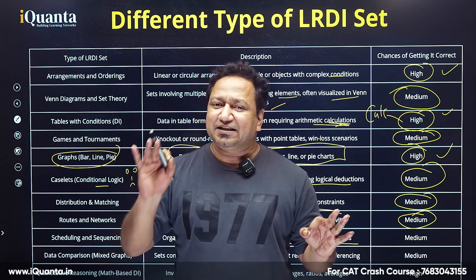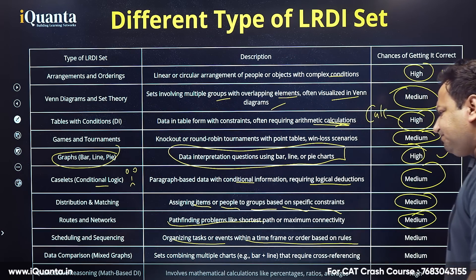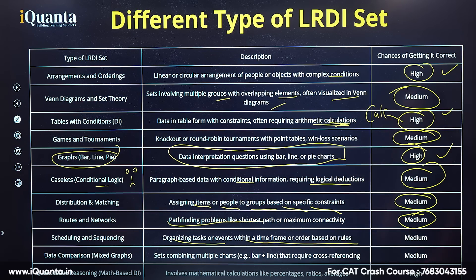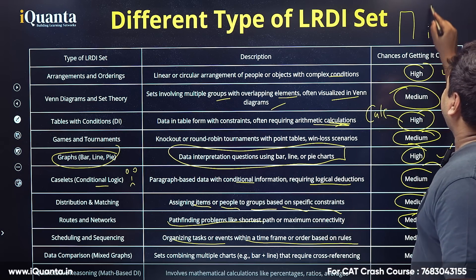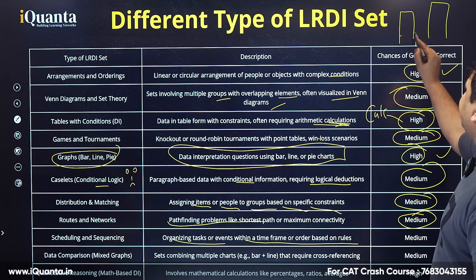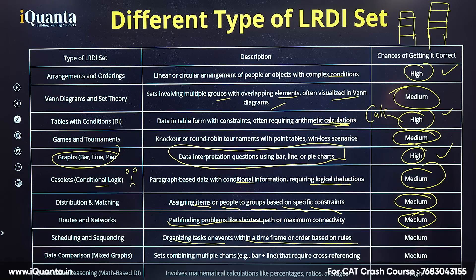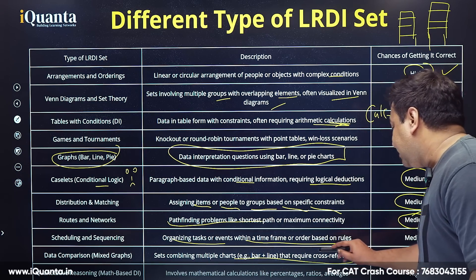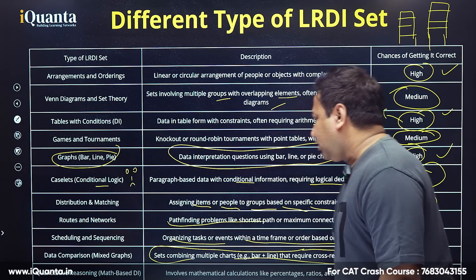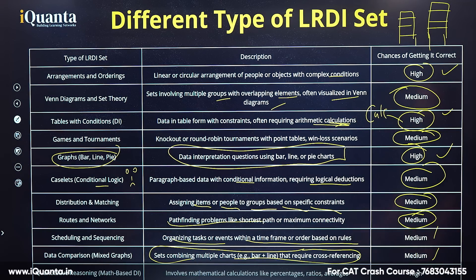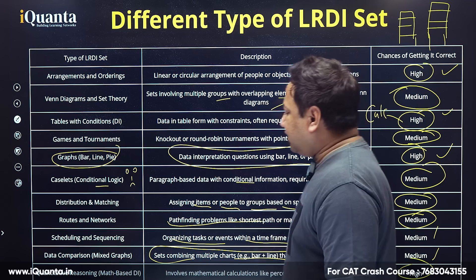Data comparison involves mixed graphs — not just bar, line, or pie, but combinations like stacked column graphs, spider web graphs, and scatter plots. Multiple data representation techniques are combined and you need to interpret them — chances are medium. Finally, quantitative reasoning: math-based DI involving calculations like percentages, ratios, and averages. This is very high probability because it is very similar to solving a long quant question.